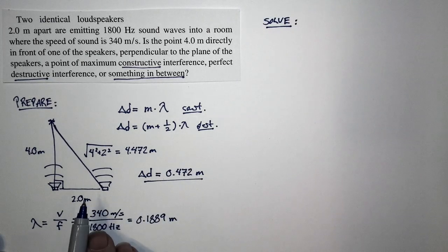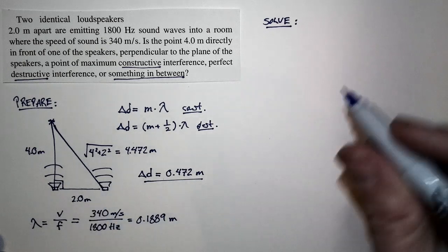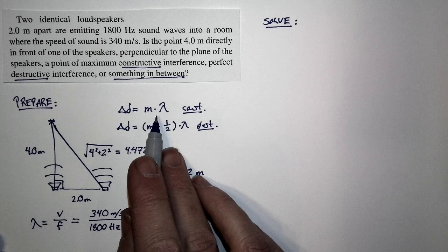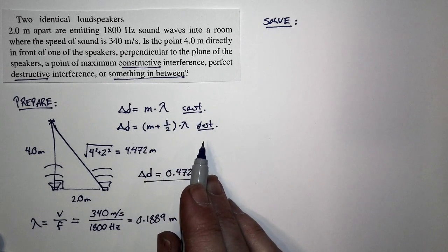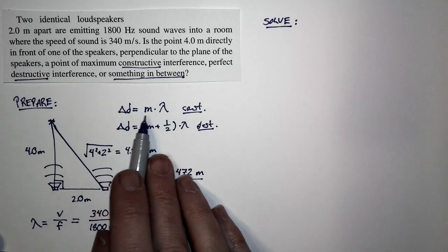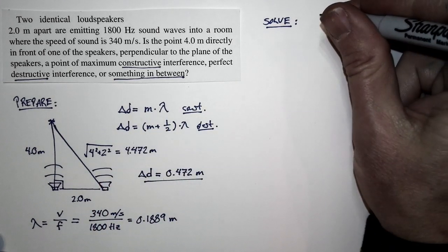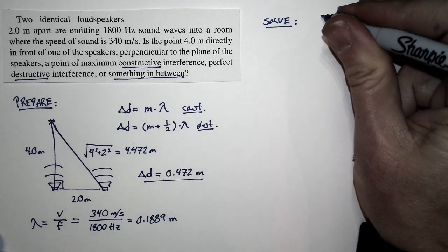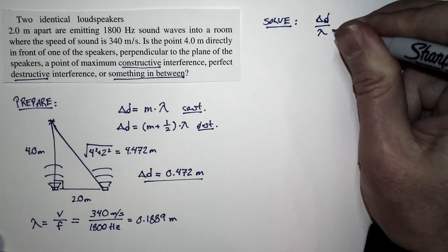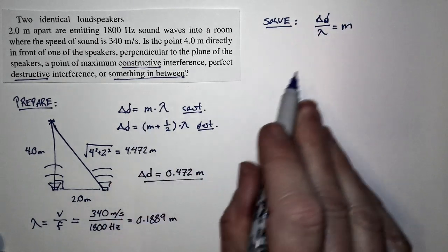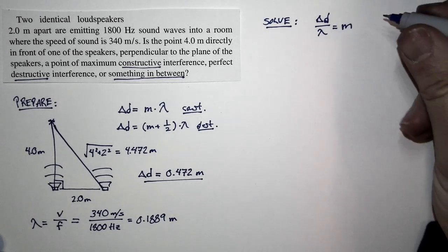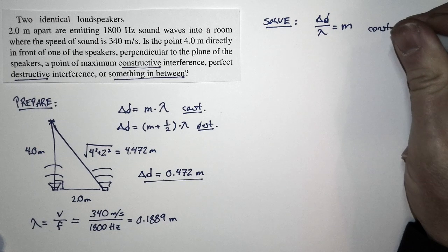If the difference in these two distances was equal to 1 times the wavelength, that would be constructive interference. If it was 2 times the wavelength, that would be constructive interference. So what we need to look at is the ratio of ΔD to λ. If I take this relationship and rewrite it, ΔD over λ equals M. If ΔD over λ is equal to an integer, that's constructive interference.